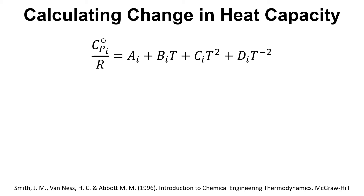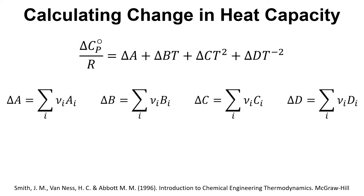The Cp for each component is often given in tables in the form: Cp divided by R equals A plus Bt plus Ct² plus Dt⁻². We can look up values of A, B, C, and D for various components. To get the delta values, we simply use the individual stoichiometric coefficients with the individual values for A, B, C, and D to obtain delta A, delta B, delta C, and delta D.